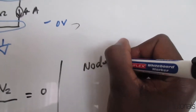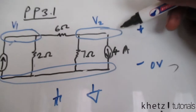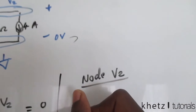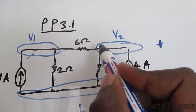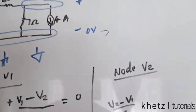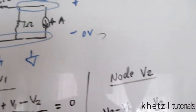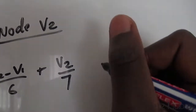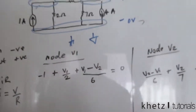Moving on to the second equation formed at node V2. The current through the six-ohm resistor going out of V2 is (V2 minus V1) divided by six. The current through the seven-ohm resistor is V2 minus zero divided by seven. Finally, four amperes is going out, and since out is positive, we add plus four equals zero.